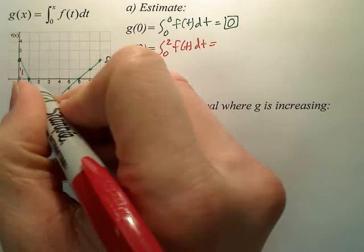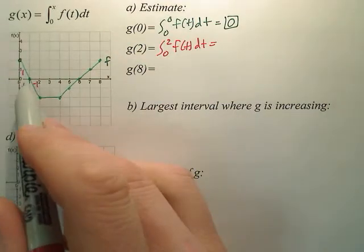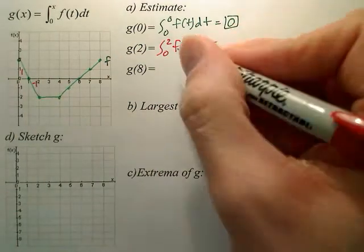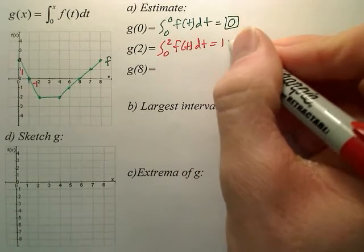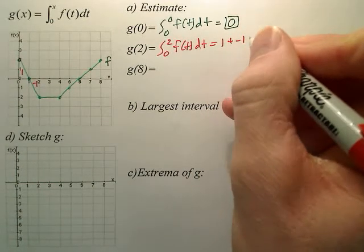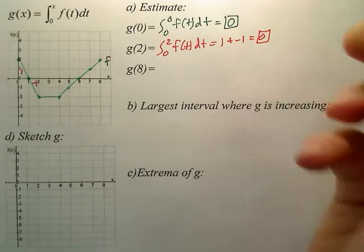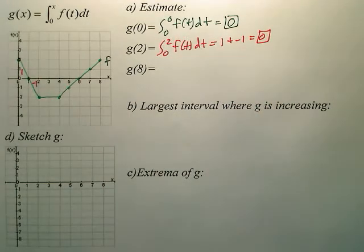this is an area of 1, this is an area of negative 1. So 1 plus a negative 1 adds up to 0. So g of 2 is also 0.